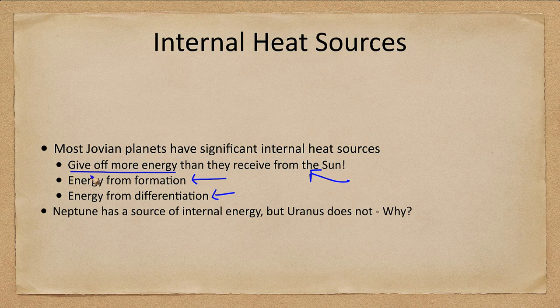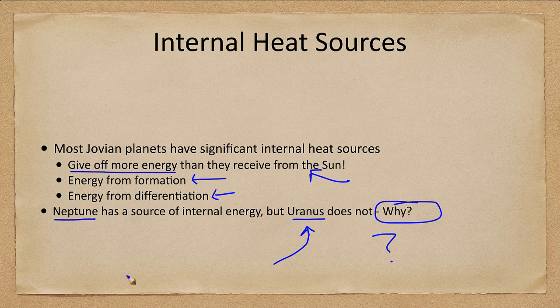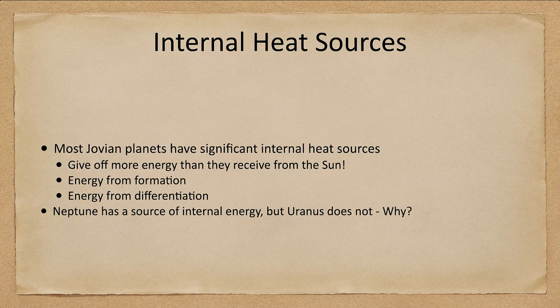One of the big questions is that Neptune, Jupiter, and Saturn have a source of internal energy, but Uranus does not appear to have this. Why? That is a good question and we really do not know the answer yet. Uranus has been studied directly only by the Voyager 2 probe that traveled out there back in 1986 and has not been studied except at a distance since that time.